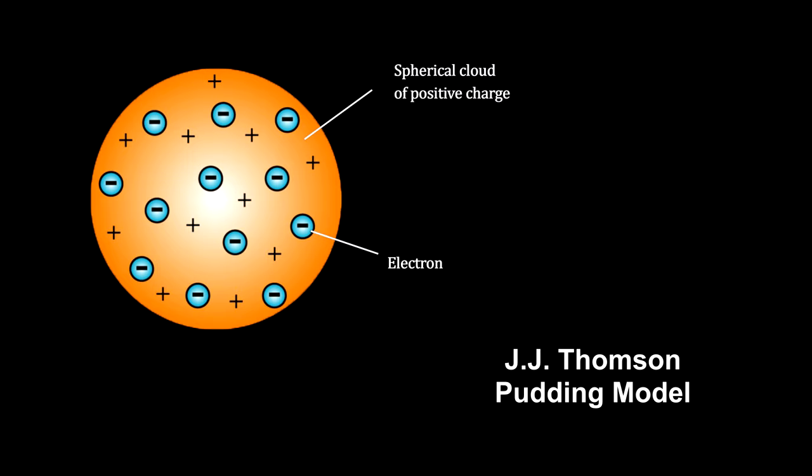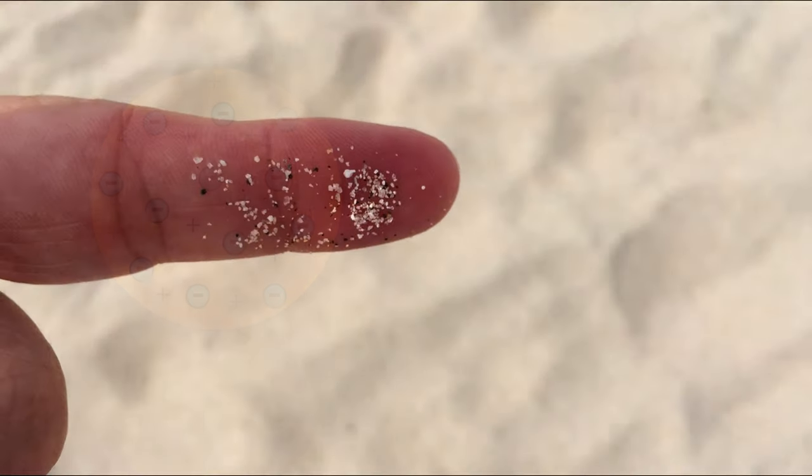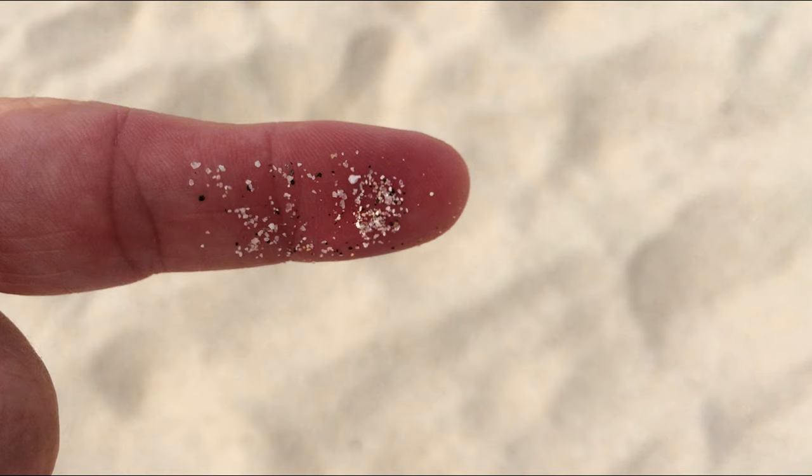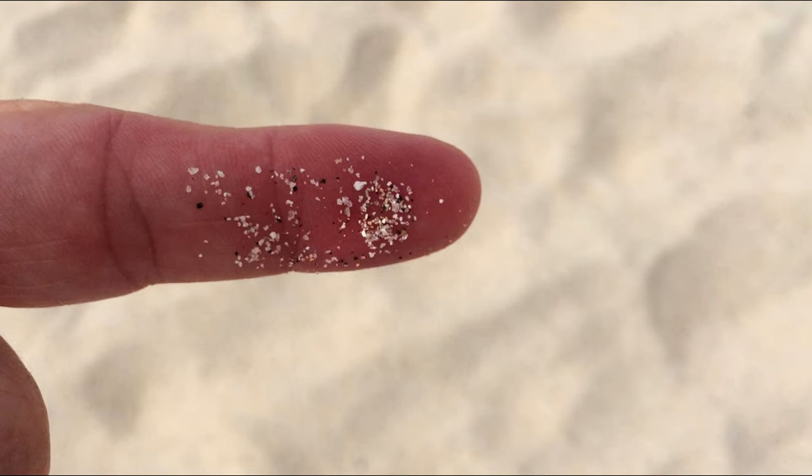A way to find out if this model is correct or not is to probe the pudding, but you need to probe with something smaller than the object being probed. For example, you can't probe a grain of sand with your finger.